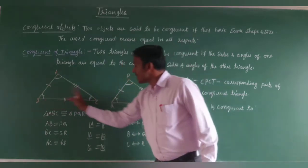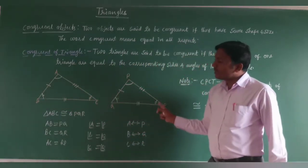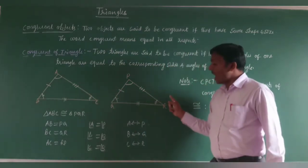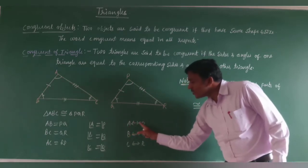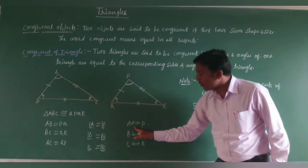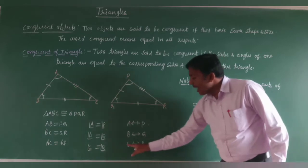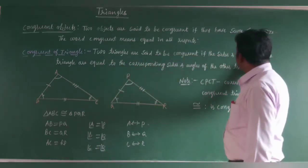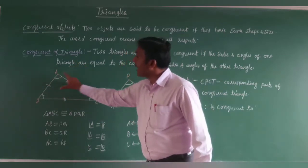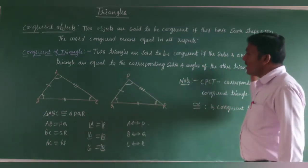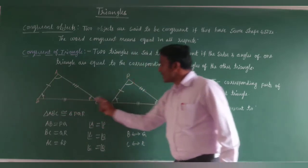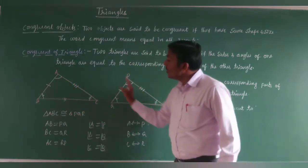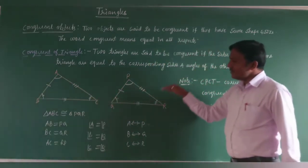A corresponds to P, B corresponds to Q, and C corresponds to R. The correspondence symbol is a double-sided arrow mark. Angle A is equal to angle P, angle B is equal to angle Q, and angle C is equal to angle R. Corresponding sides and corresponding angles must be equal. Then only we say these two triangles are congruent to each other.